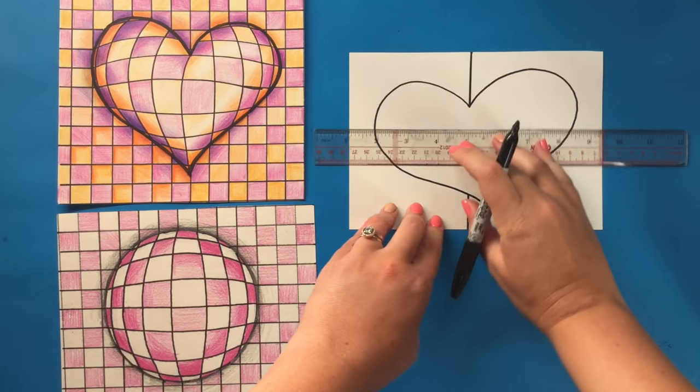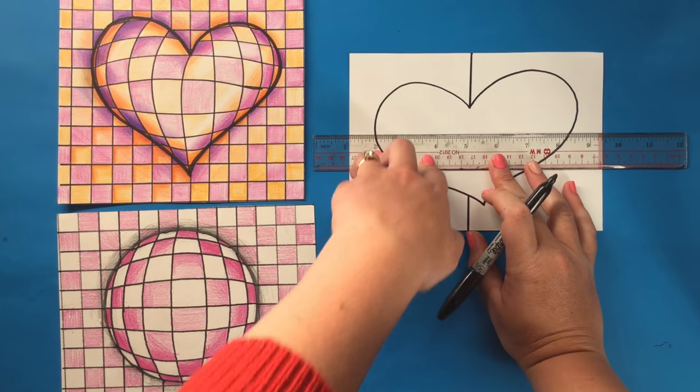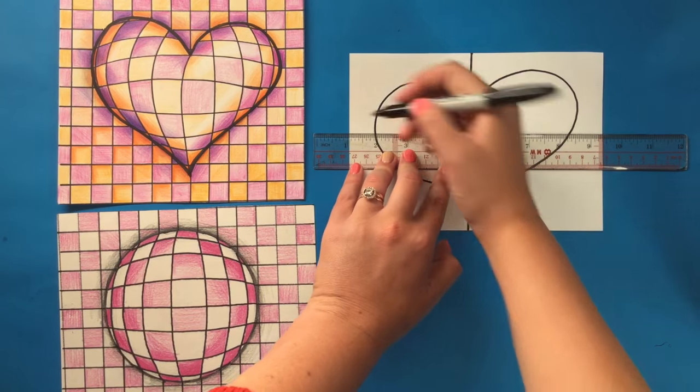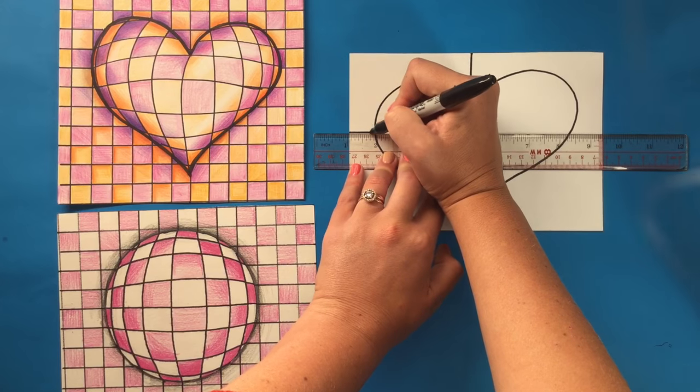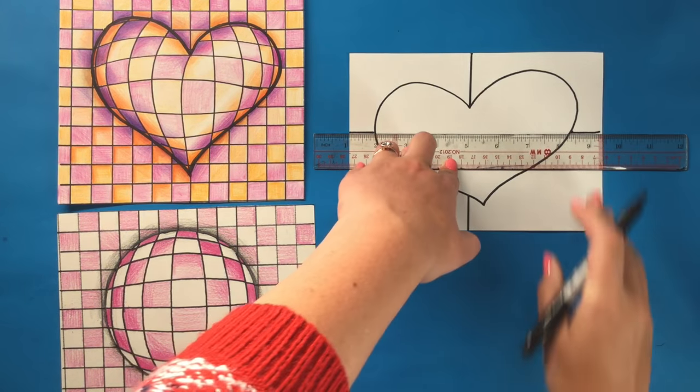And then go ahead and take your ruler or any kind of straight edge. If you don't have a ruler, use a book or a piece of cardboard. And you're going to again draw a line across your paper, skipping the shape.